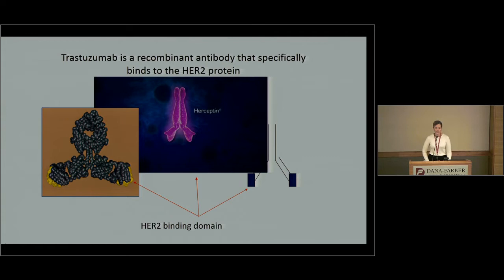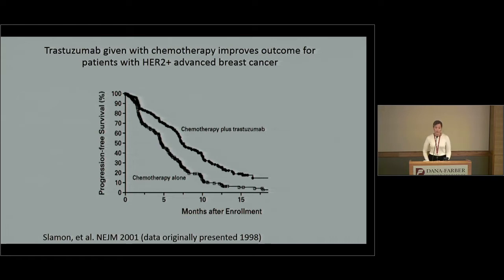Trastuzumab is a monoclonal antibody developed specifically to bind to the HER2 protein — this is Herceptin, and the picture shows where it binds. When they gave Herceptin together with chemotherapy to patients who had metastatic HER2-positive breast cancer, chemotherapy plus trastuzumab versus chemotherapy alone, patients who got trastuzumab did much better. This was really revolutionary — results from the original study showing this is a very effective and important drug.